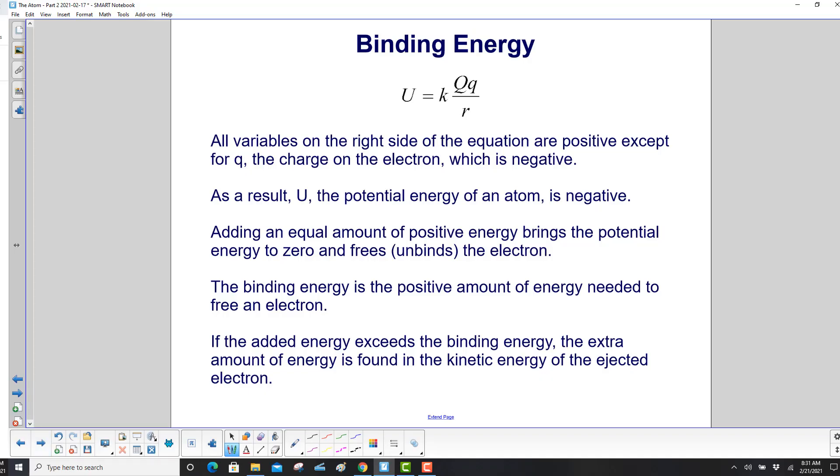All variables on the right side of this equation are positive, except for little q, the charge on the electron, which is negative. As a result, U, the potential energy of an atom, is negative.